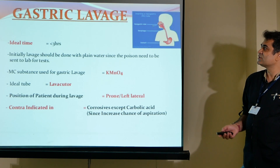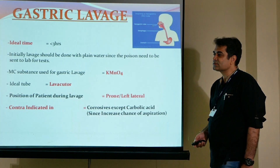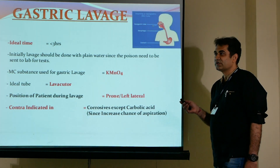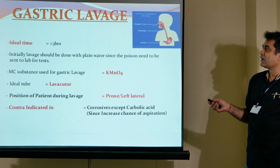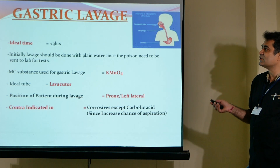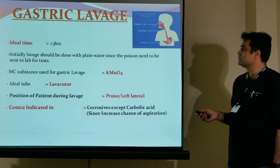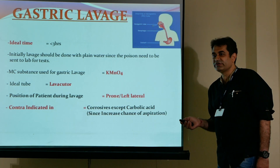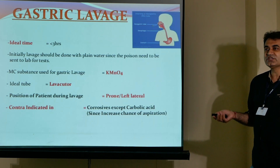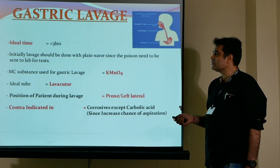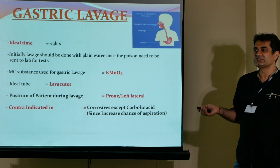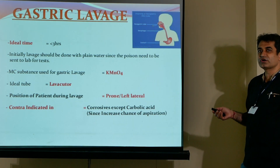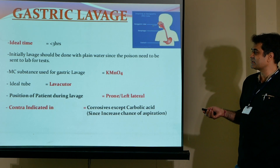Key takeaways: the ideal time for gastric lavage is within three hours of poisoning or ingestion — after three hours it becomes mostly useless. Initially, lavage should be done with plain water since the poison must be sent for lab testing. The most common substance used for gastric lavage is potassium permanganate at 1:5000 strength. The ideal tube is the lavacutor, Ryle's tube, or a nasogastric tube.